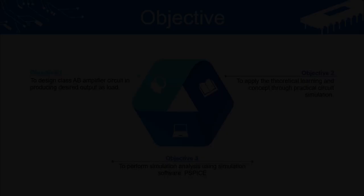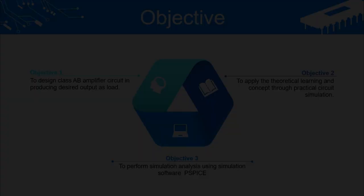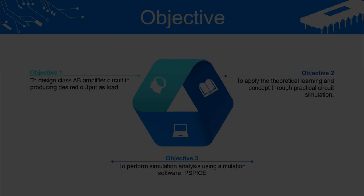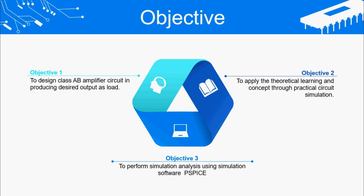The objective of the project is: first, to design a Class AB amplifier circuit producing the desired output as load; second, to apply theoretical learning and concepts through practical circuit simulation; and last, to perform simulation analysis using simulation software PSpice.